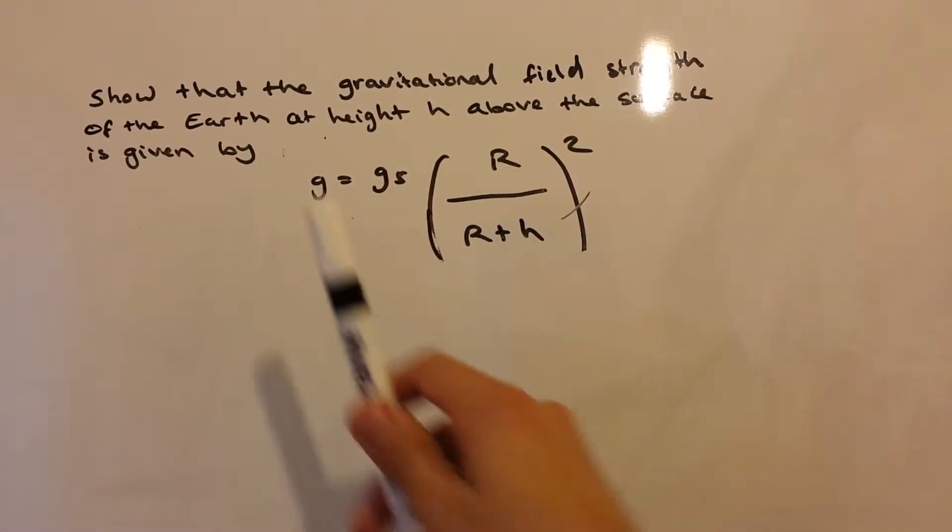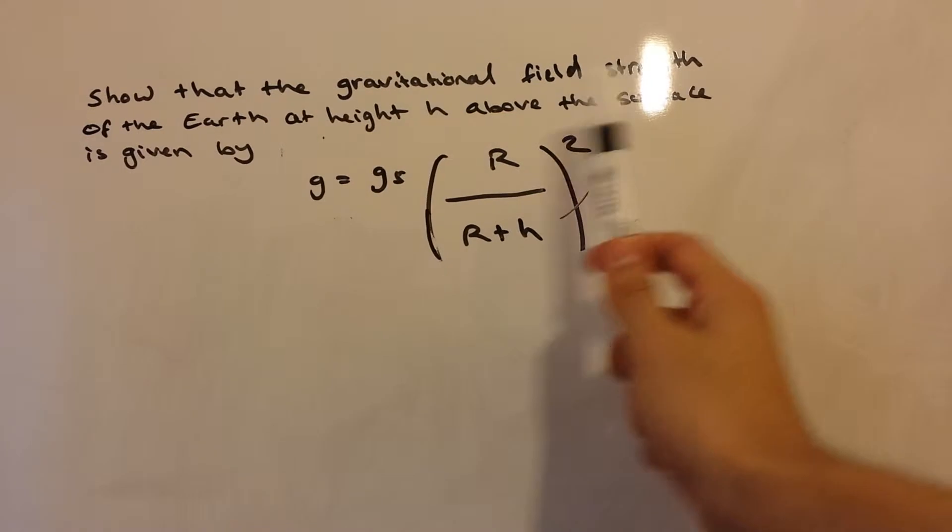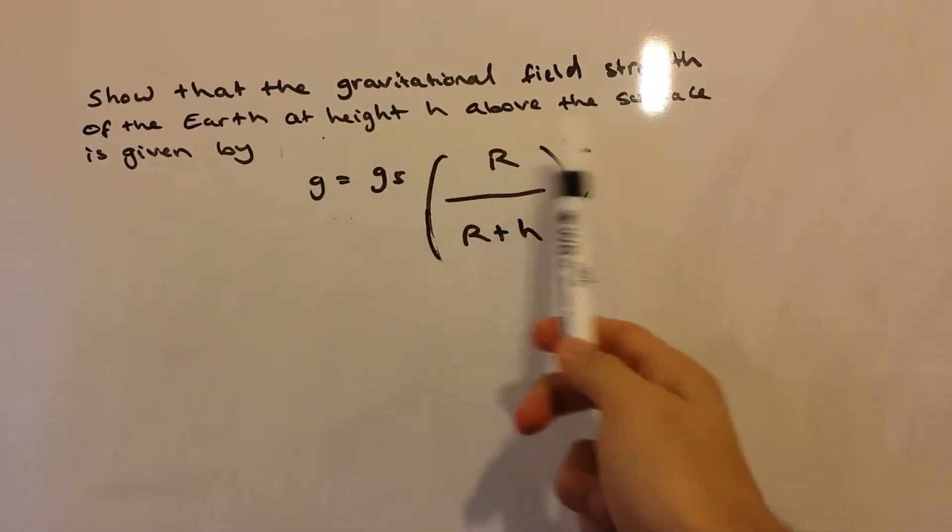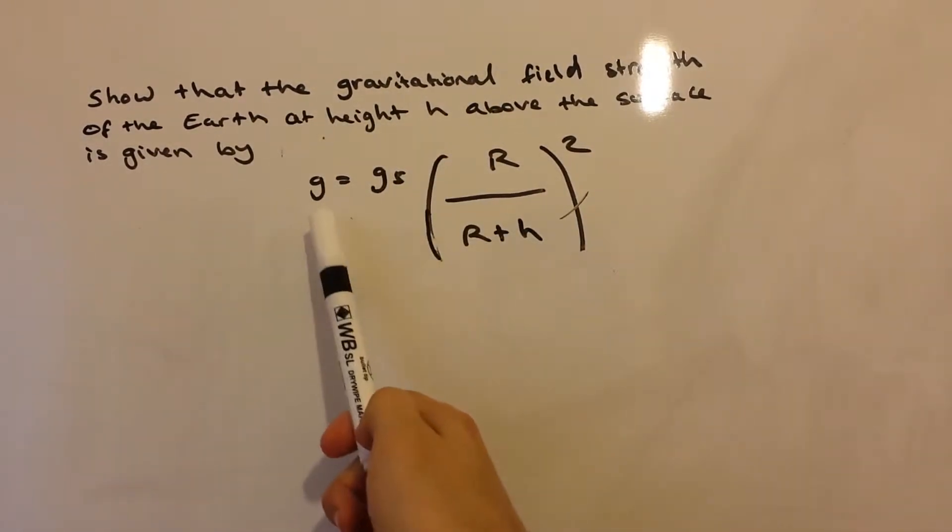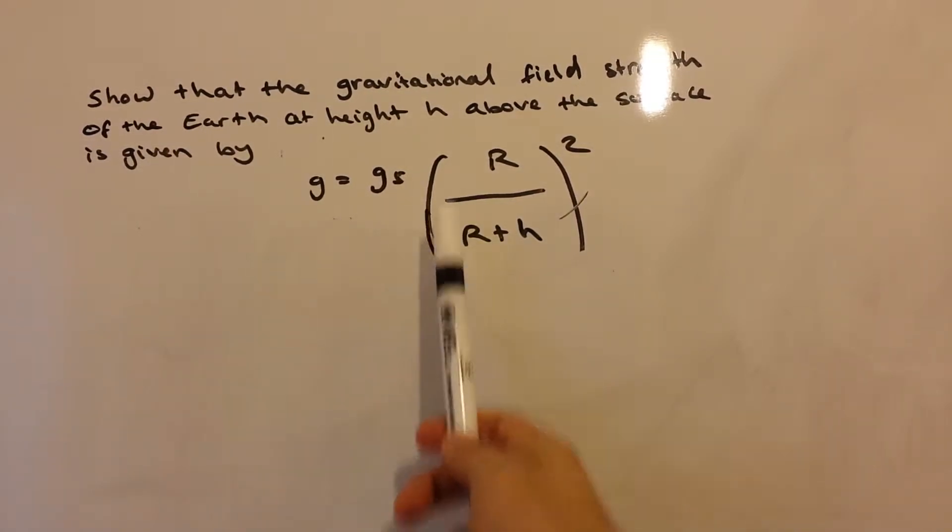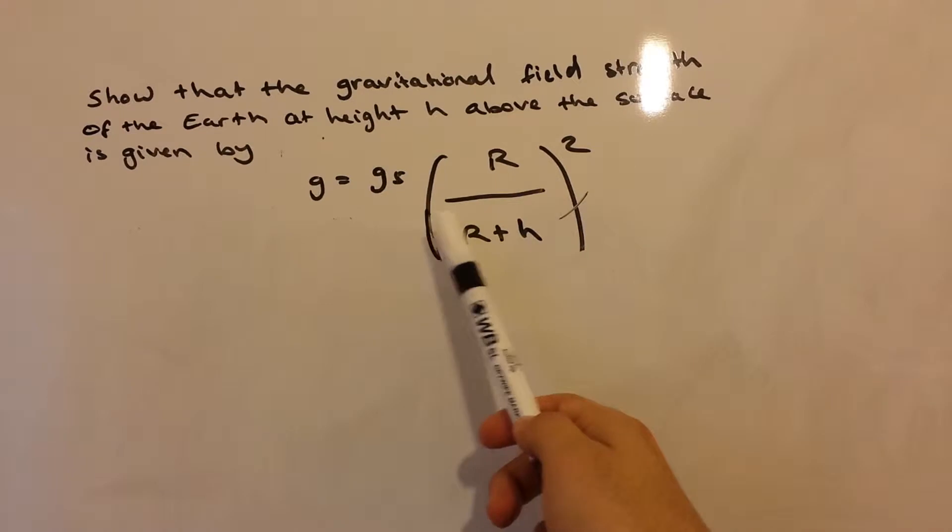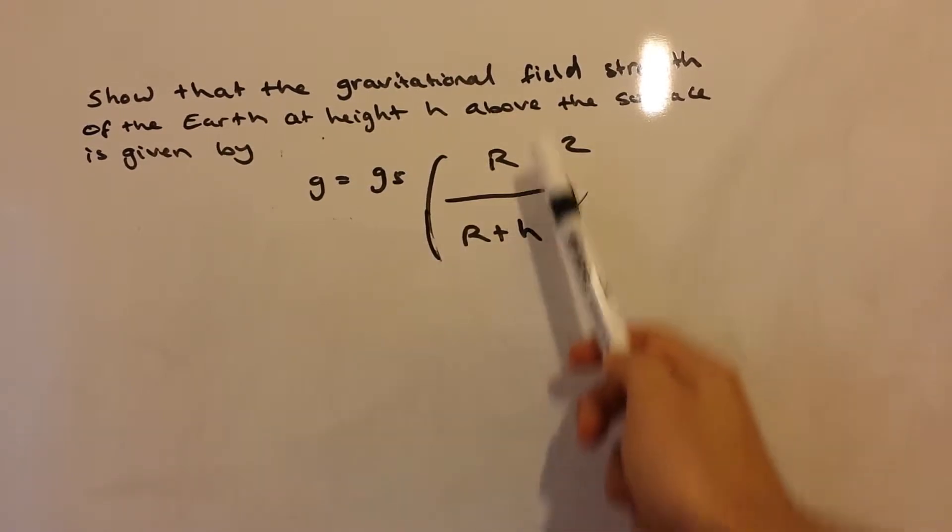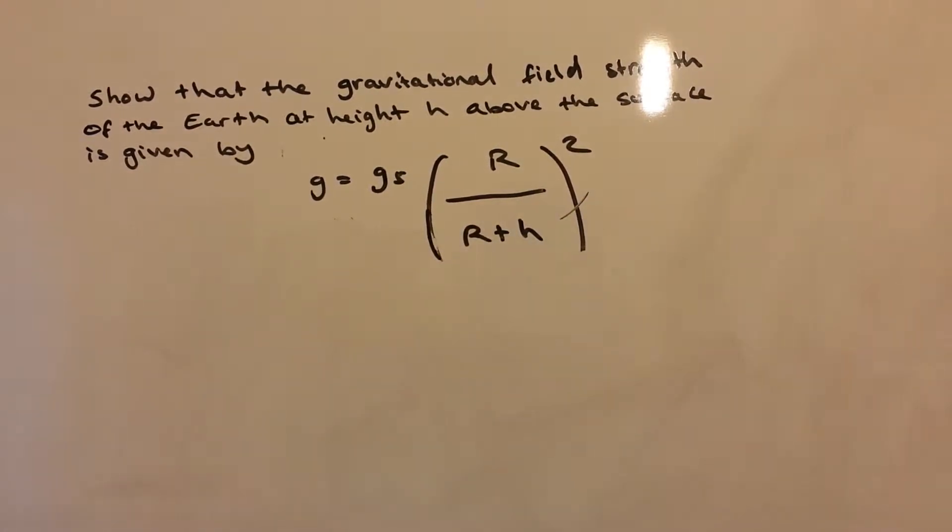So, the question says, show that the gravitational field strength of the Earth at height h above the surface is given by gravitational field strength at height h above the surface equals gravitational field strength at the surface multiplied by (R/(R+h))².